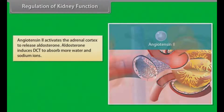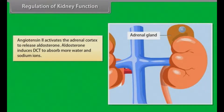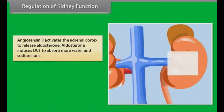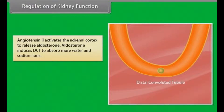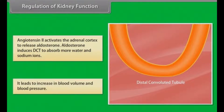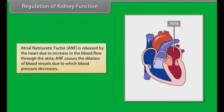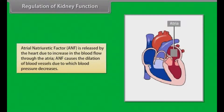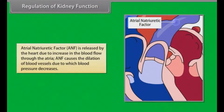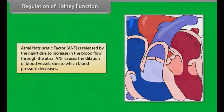Angiotensin-2 activates the adrenal cortex to release aldosterone. Aldosterone induces the DCT to absorb more water and sodium ions, leading to an increase in blood volume and blood pressure. Atrial natriuretic factor (ANF) is released by the heart due to an increase in blood flow through the atria. ANF causes dilation of blood vessels, which decreases blood pressure.